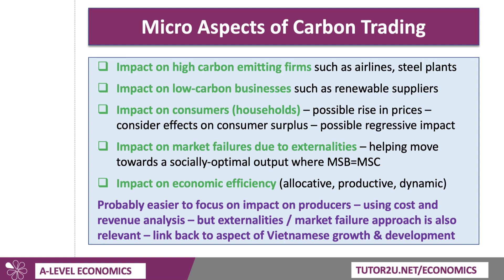At a micro level, this policy could help Vietnam move towards a sustainable, socially optimum output where social benefit is in balance with social cost. I would definitely use economic efficiency here — allocative, productive, and in particular dynamic efficiency. It's probably easier in this first knowledge and application point to focus on producers, because you can use your cost and revenue analysis and market failure diagrams. Make sure you link back to the Vietnamese economy, because the idea is they're trying to transition to a low carbon development model — and that's always linked back to why they think carbon trading could be the most efficient way of doing this.